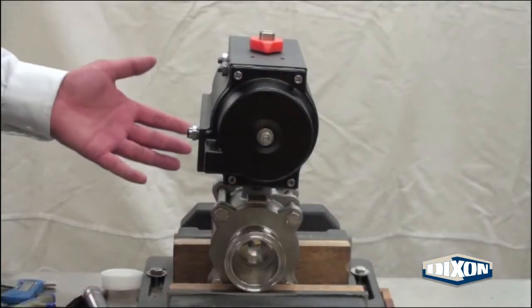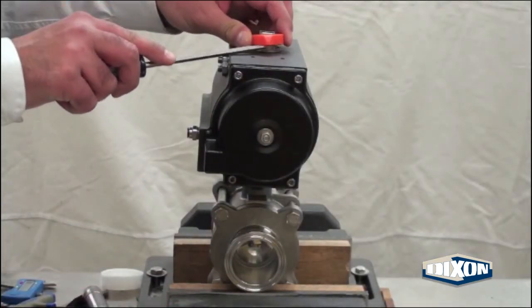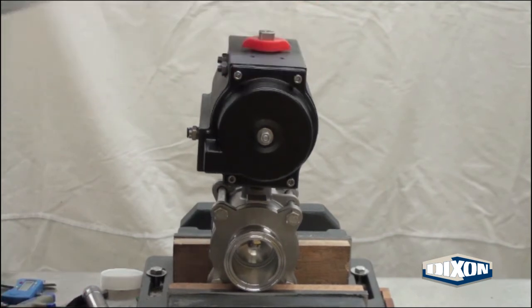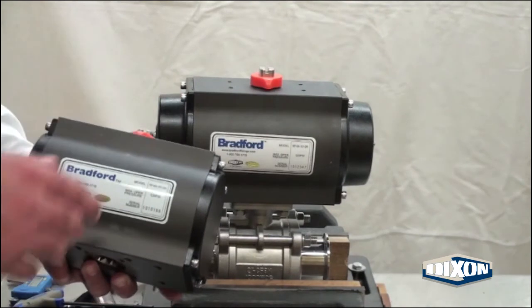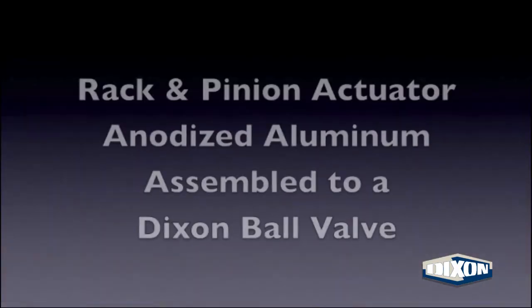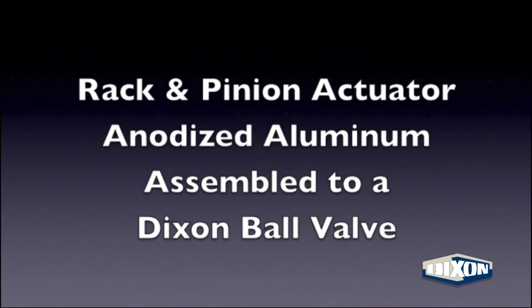For fail closed assembly, remove the indicator so that it matches the flow path of the ball. Assembly is the same for both spring return and double acting actuators.